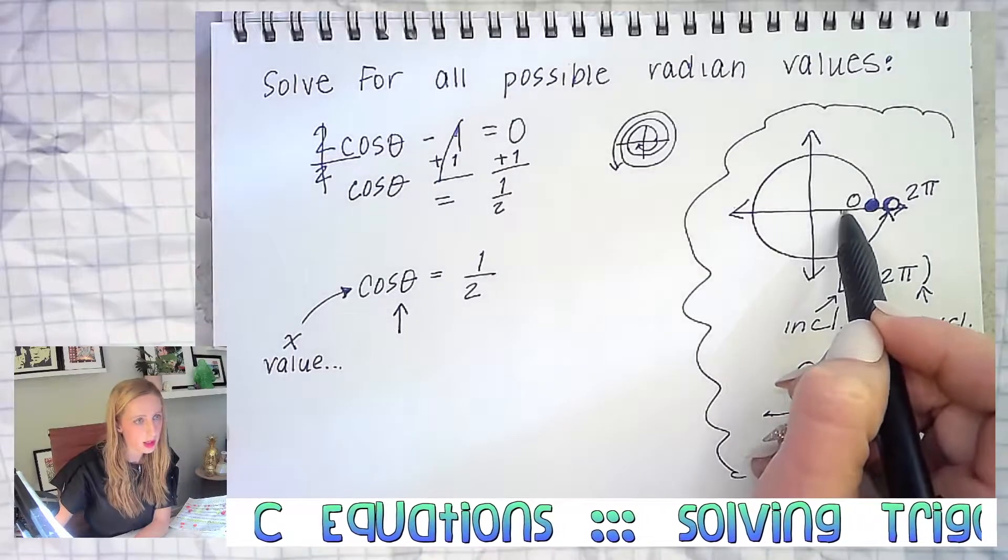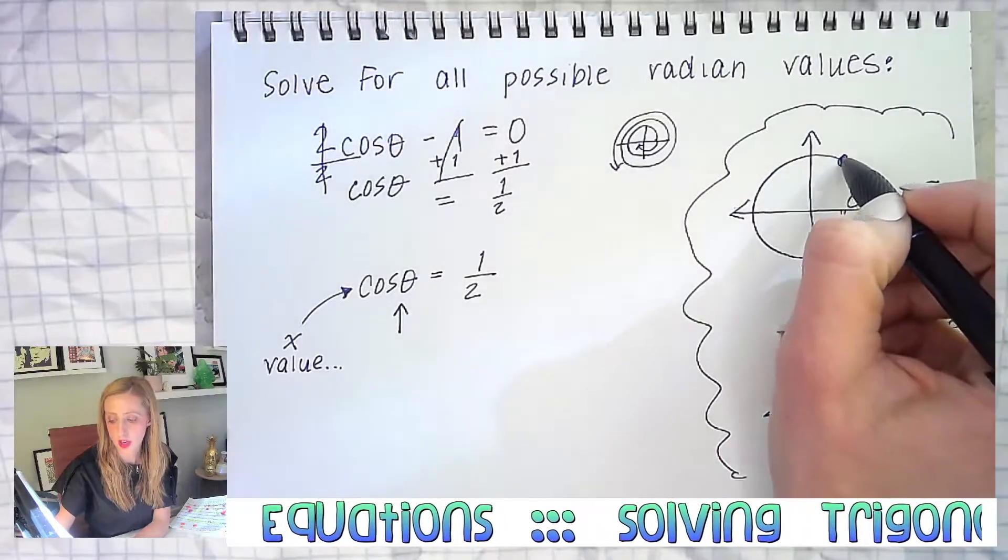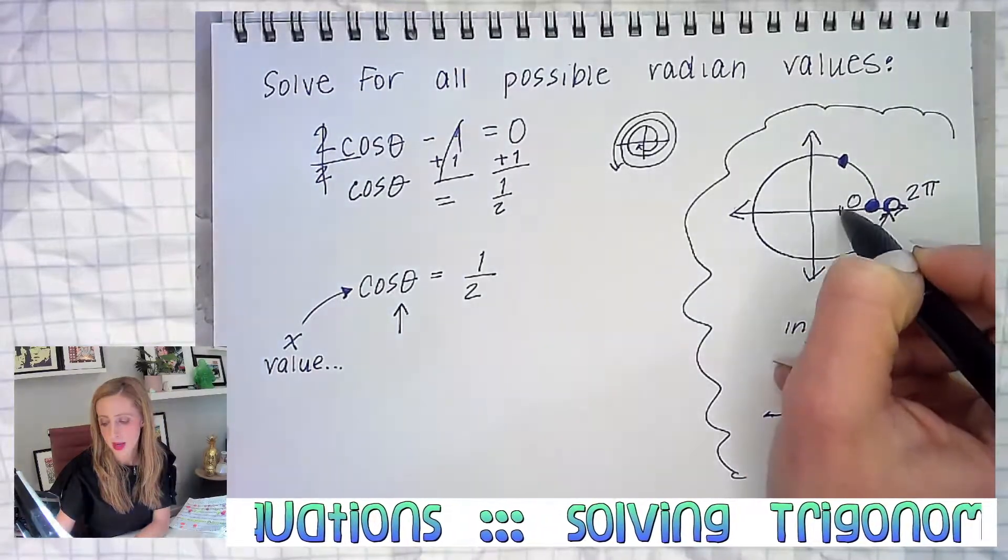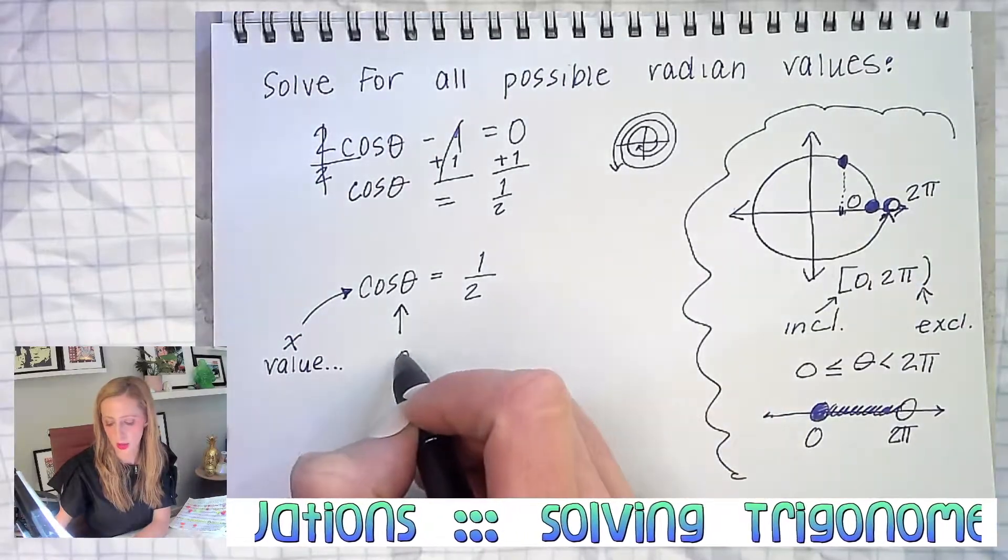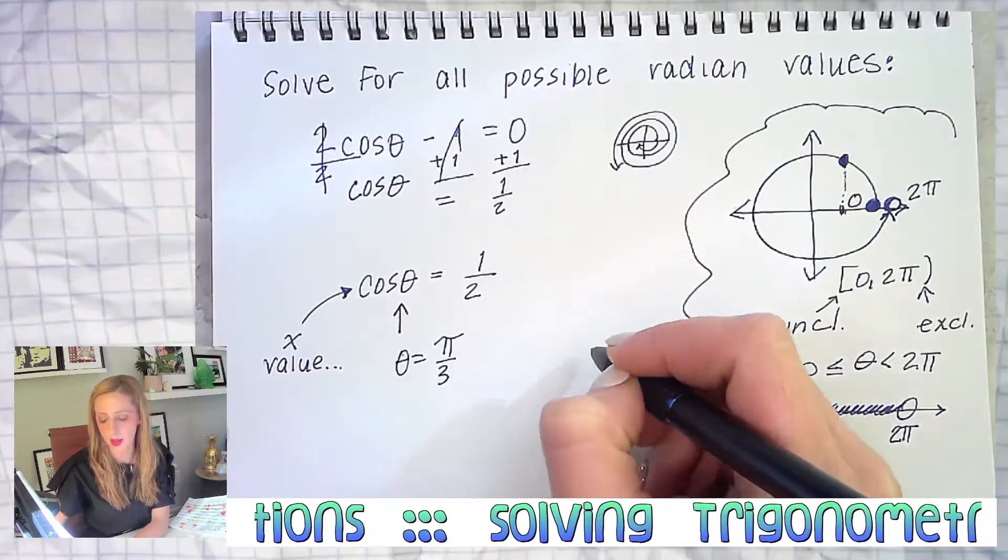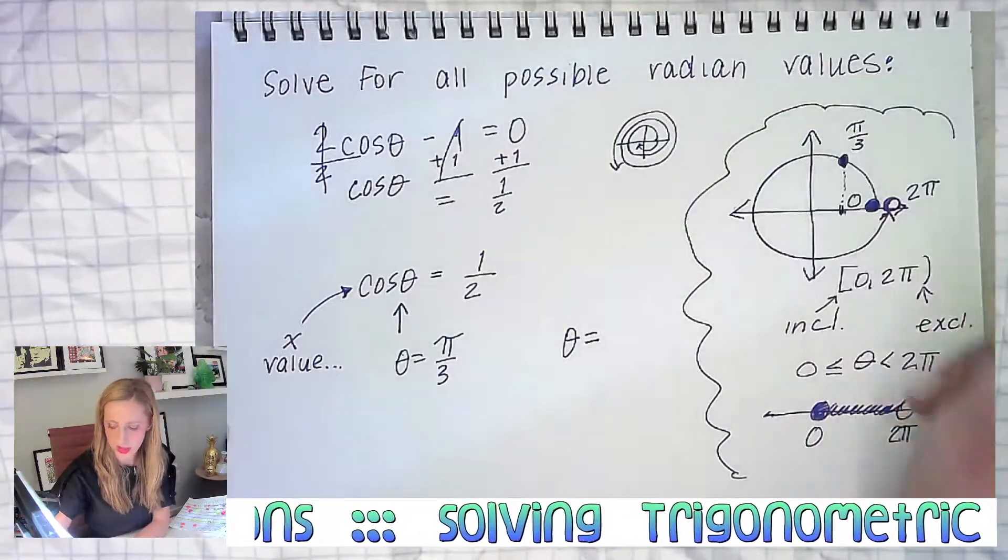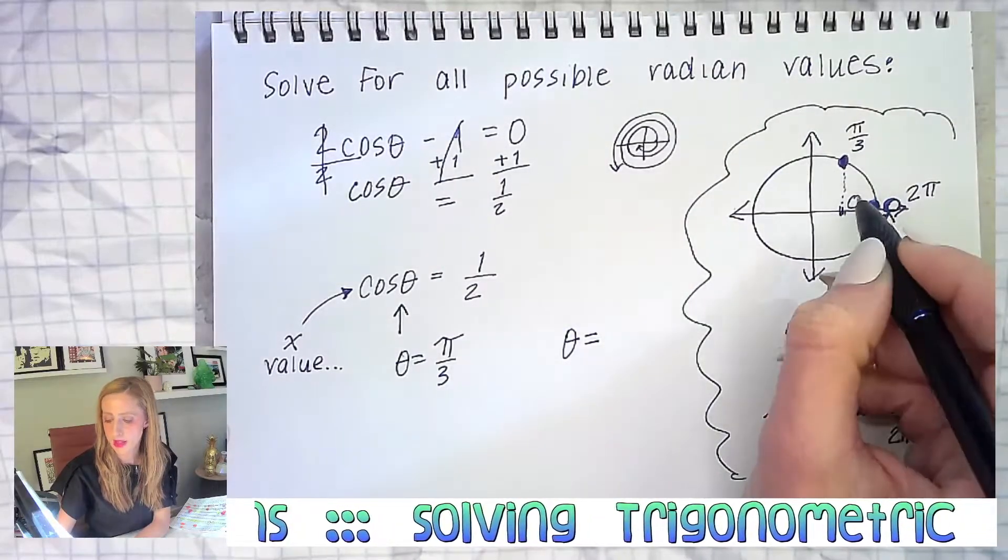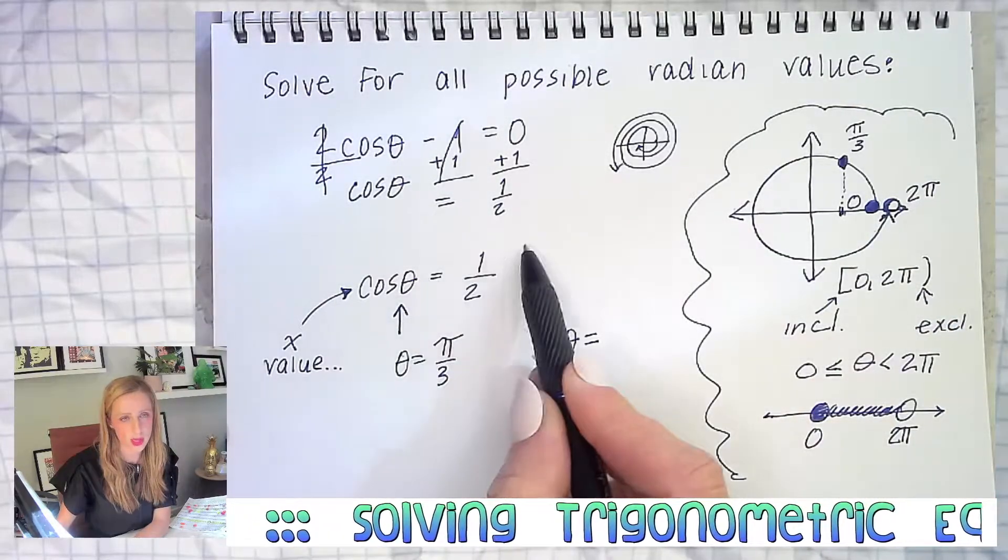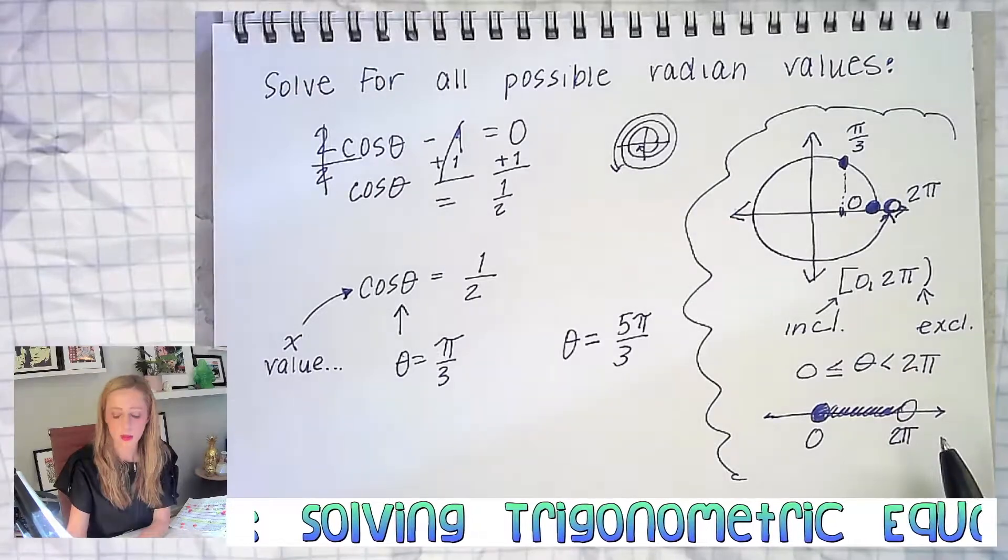A period is the length of an interval where it takes something to start repeating itself. Zero to two pi, the period is two pi in length. Which angles have the cosine equal to a half or have an x value of one half? Pi over three. There's the one half. Pi over three is one angle, theta equals pi over three. What's the other angle, not overlapping pi over three but somewhere else on this picture where cosine - yes, five pi over three.